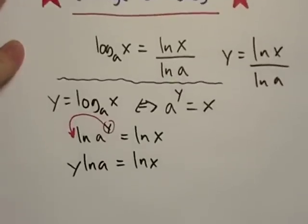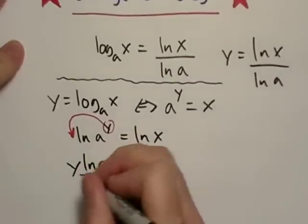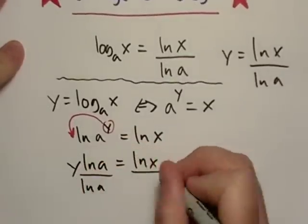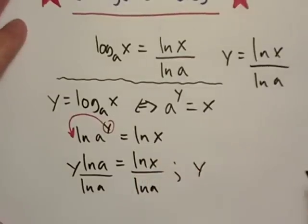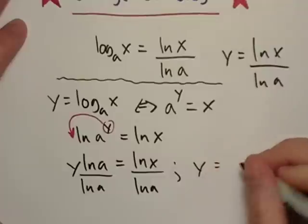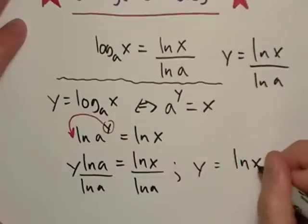So now we're there. Now all I have to do is really just divide both sides by this constant, which is natural log of A and that is how I arrive at my change of base formula right there.